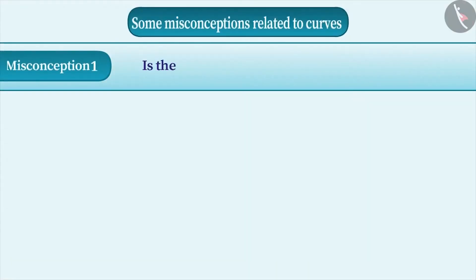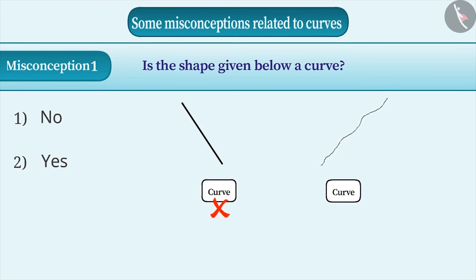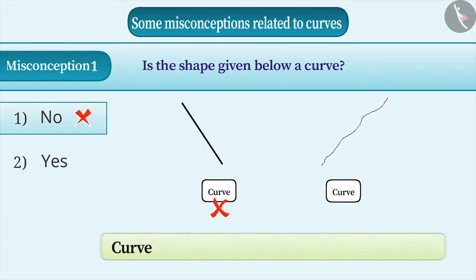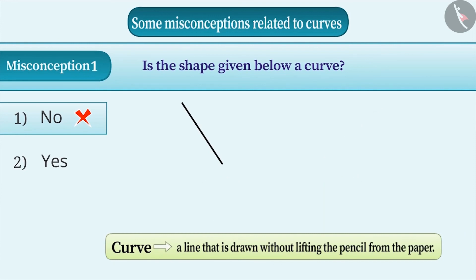Misconception 1: Is the figure given below a curve or not? Many students have a misconception that only zigzag lines are curves and that straight lines are not curves. With this misconception, option 1 is answered, which is incorrect. When we learn the definition of a curve, we learn that any line that can be made without picking up the pencil from the paper is called a curve. A straight line drawn on paper without picking up the pencil is also a curve. Therefore, the correct answer is option 2.